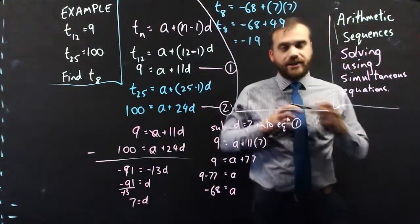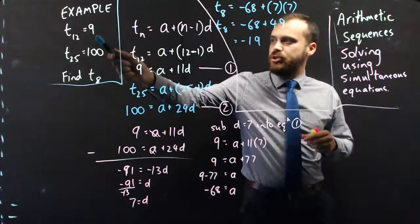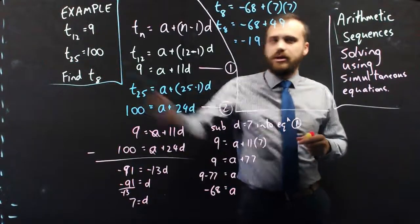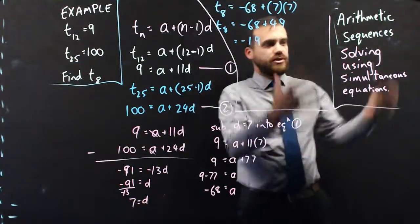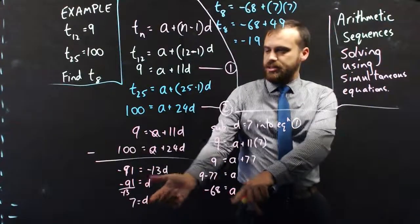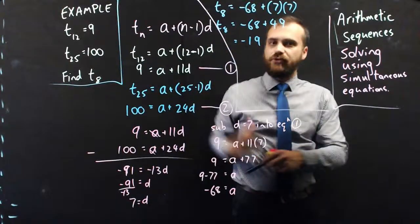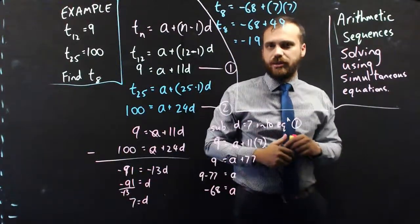So a classic in the arithmetic sequences genre. If you know one term and you know another term, you generally should use simultaneous equations to find out what a and d are. That gives you your formula, and then you can find whatever term it is that you might be looking for.